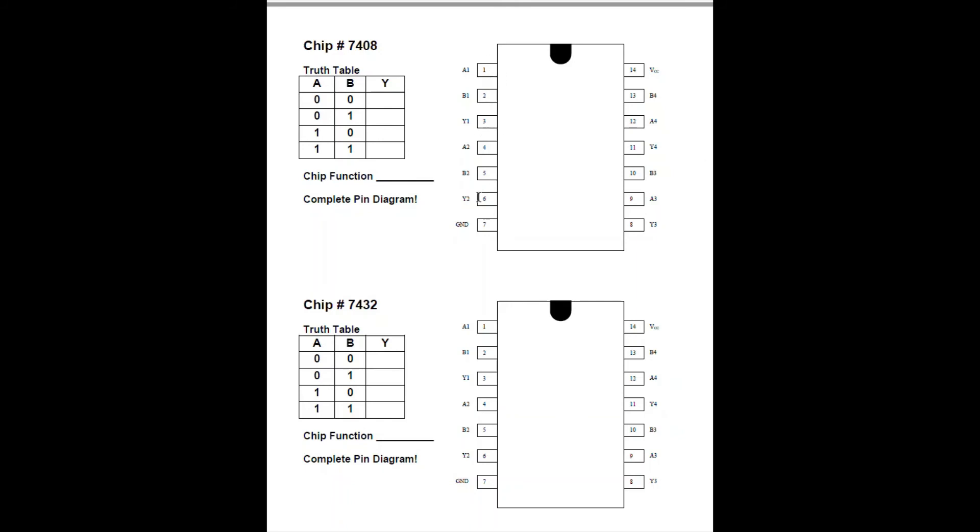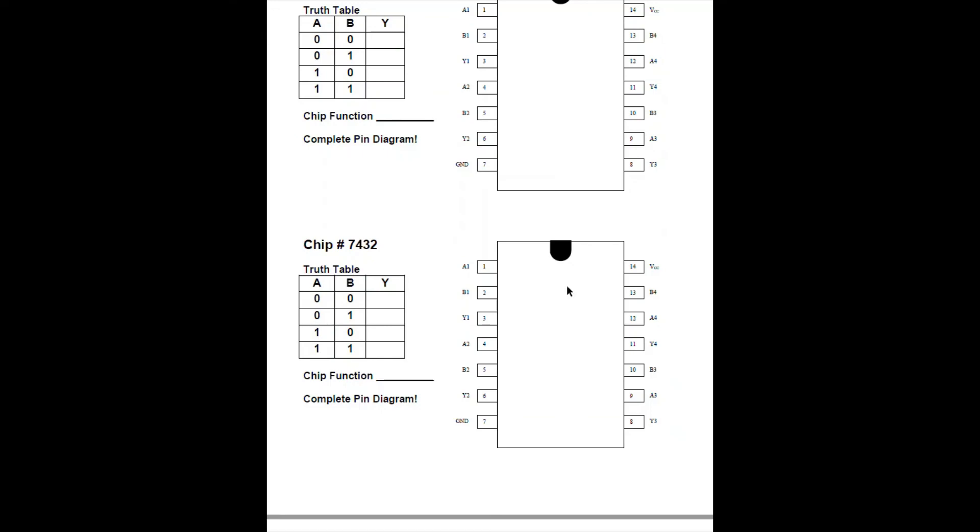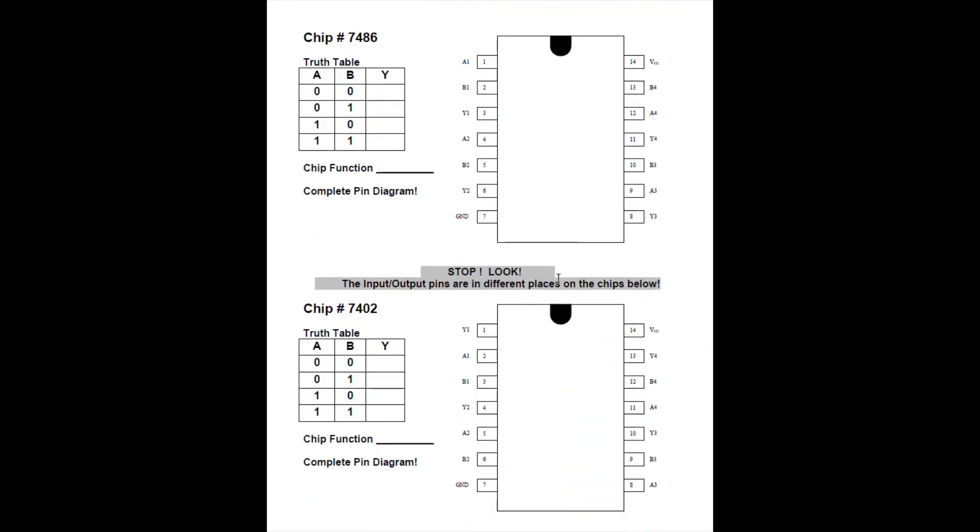Well, it's a 7408 chip. I'm not telling you what type of logic gate is on there, but again there's going to be four copies of the same type of logic gates. Here are the inputs, output, input, output. Again, the ground and the power are in the same position, so you're not going to have to change anything. Just pull out the old chip, put this one in, see what it does. Now if you keep going, you're going to then test the 7432, the 7486.